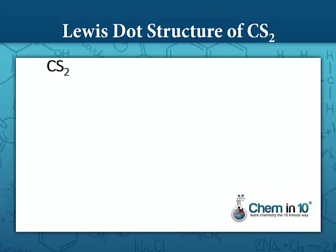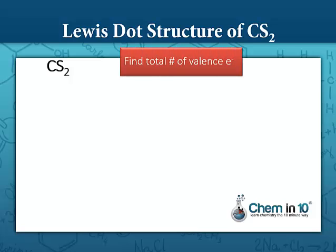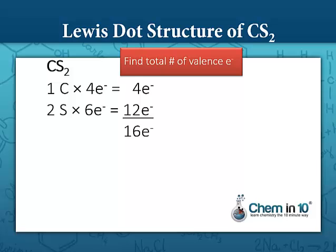Let's look at carbon disulfide. We need to first count the number of valence electrons. Carbon brings four valence electrons to the table, and each sulfur brings six electrons. Since we have two sulfur atoms, that's 12 electrons altogether. So we have 16 valence electrons to work with.